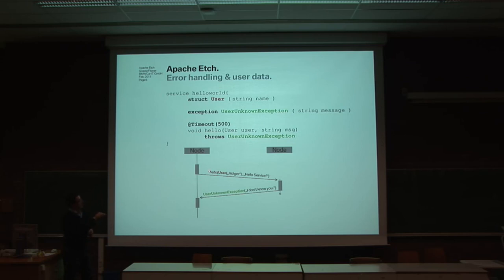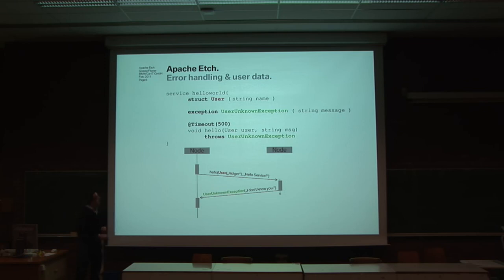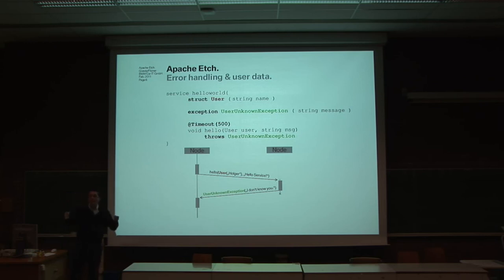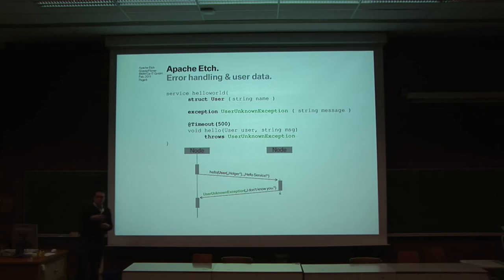On the wire, it's possible that you say hello to the server, and the server can respond with a UserUnknownException — so you can really use the paradigm of object-oriented exception handling in a network service. You can also annotate services with timing constraints: for example, you can say you want the hello method to answer within a time bound of 500 milliseconds, and this will throw a timeout exception if that bound is exceeded.